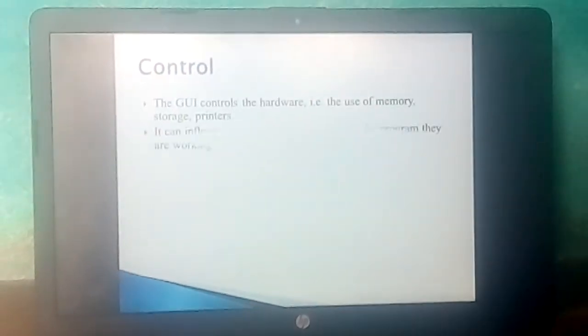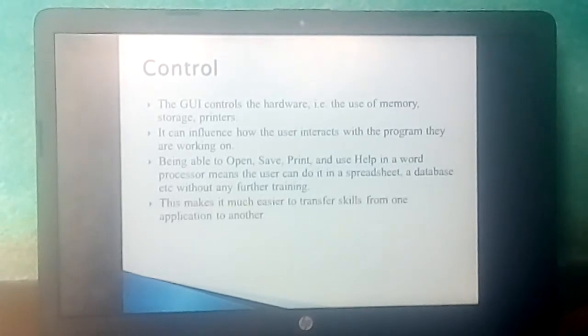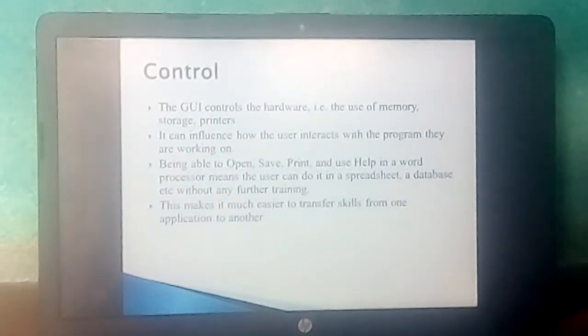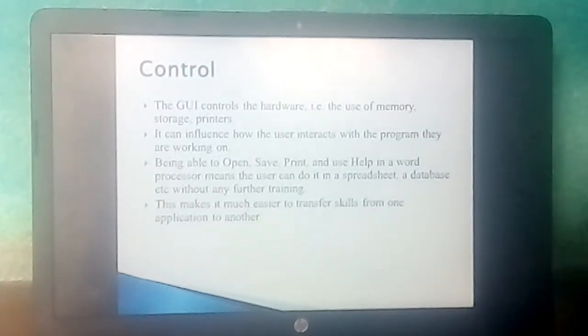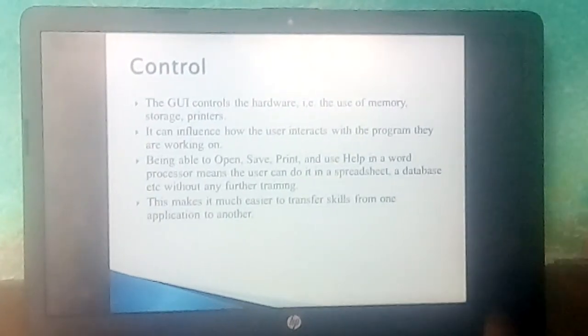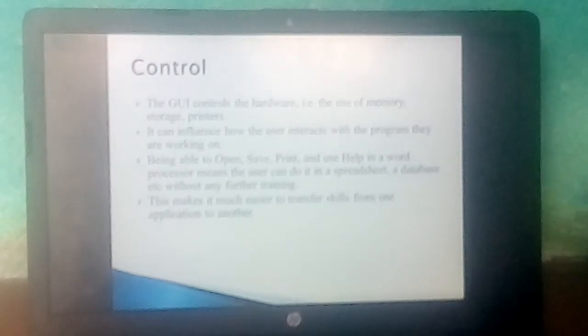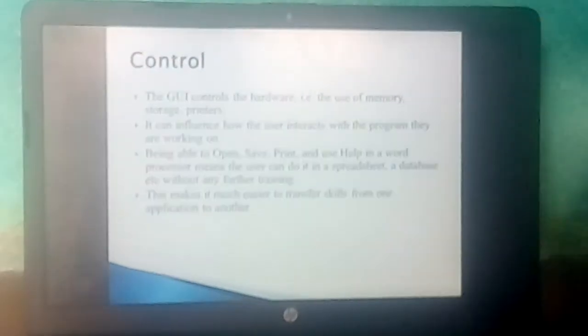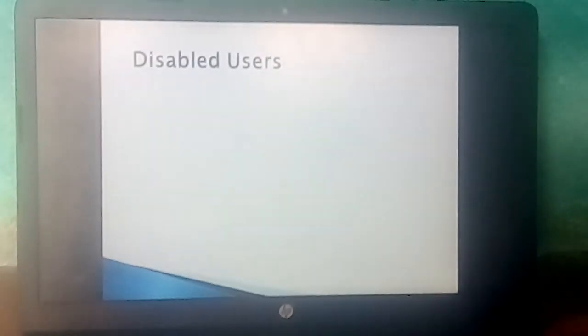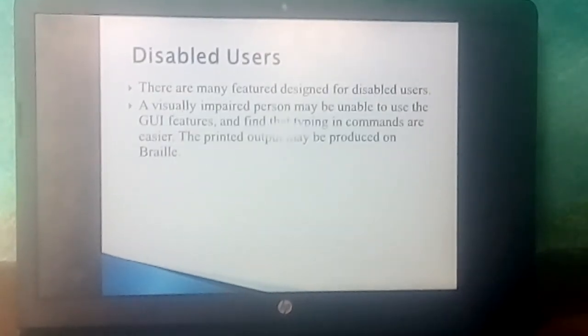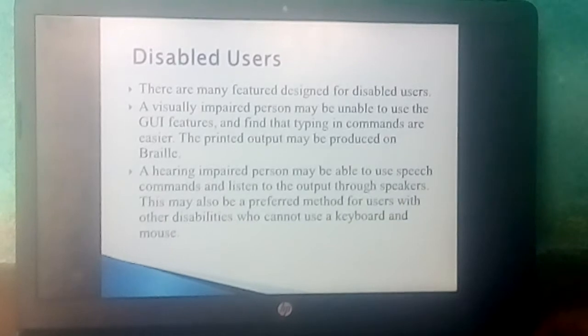The GUI controls the hardware, the use of memory, storage, printer. It can influence how users interact with the program they are working on, and this makes it much easier to transfer skills from one application to another. Disabled users: there are many features designed for disabled users. A hearing impaired person may be able to use speech commands and listen to output through speakers. This may also be a preferred method for users with other disabilities who cannot use a keyboard and mouse.